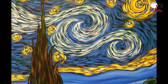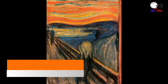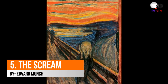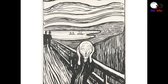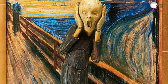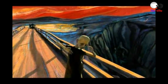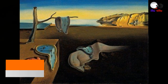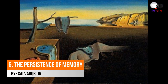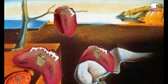Starry Night is one of the most well-known paintings in modern culture. Number five: The Scream by Edvard Munch. The most famous piece by Edvard Munch, painted around 1893, was painted using oil and pastel on cardboard. This frightening painting is on display at the National Gallery in Oslo, Norway. Number six: The Persistence of Memory by Salvador Dali, painted in 1931 by the Spanish artist Salvador Dali.